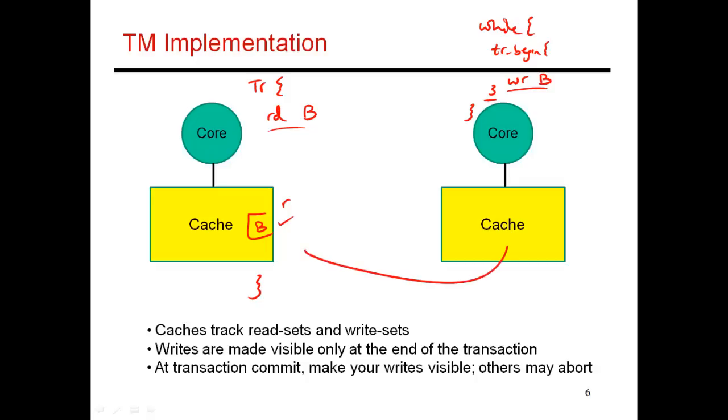So it ends up sending an invalidate to this transaction, saying I have modified B. If you have read B, you need to abort and restart. So this gets aborted, restarts. And then when it restarts again, it reads B. And soon after that, because there's a while loop over here, this transaction goes back up over here.